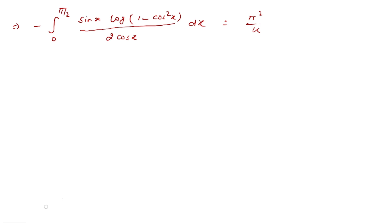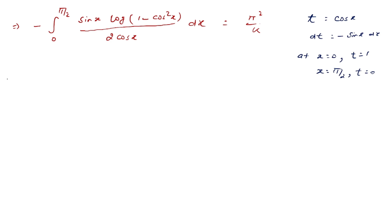Let t = cos(x), then dt = −sin(x) dx. At x = 0, t becomes 1, and at x = π/2, t becomes 0. So integration हो गया। The term −sin(x) dx becomes dt. Pulling out 1/2, limits change: 0 की जगह 1, and π/2 की जगह 0.